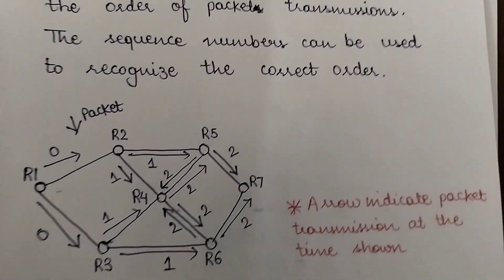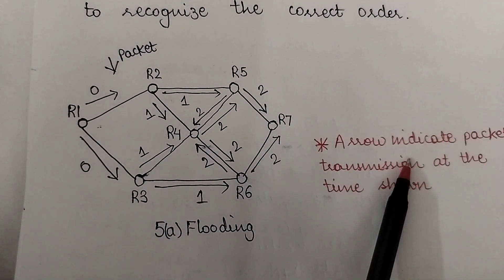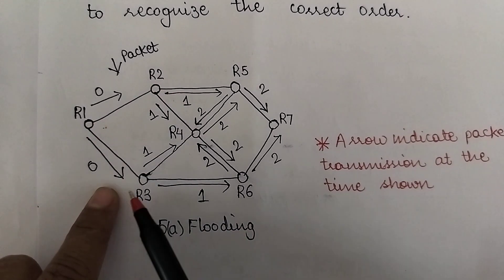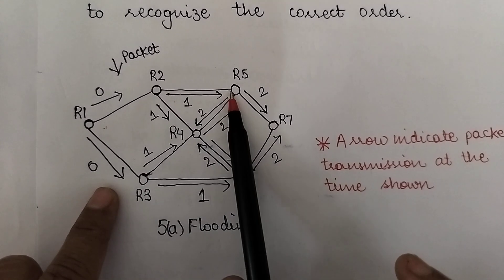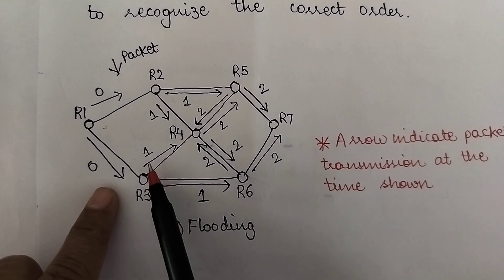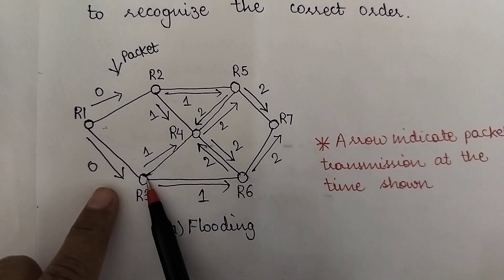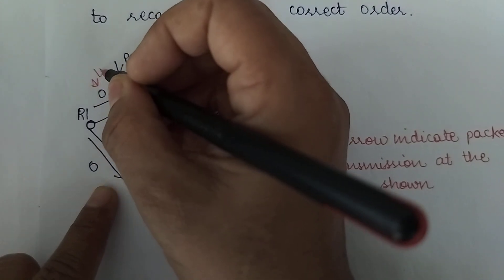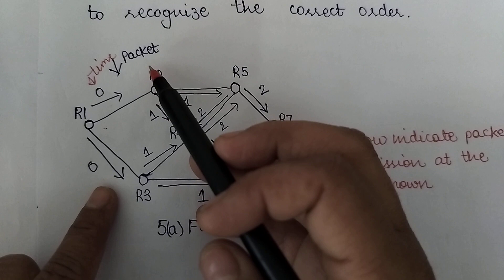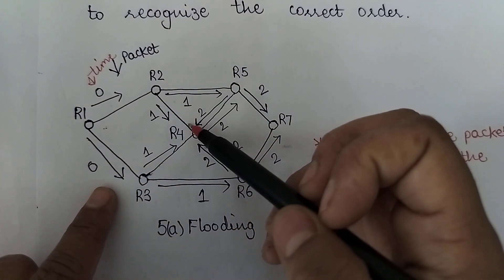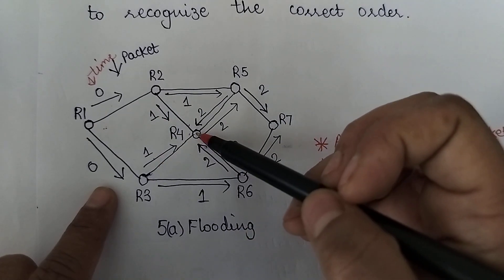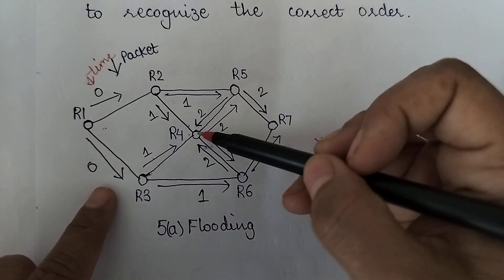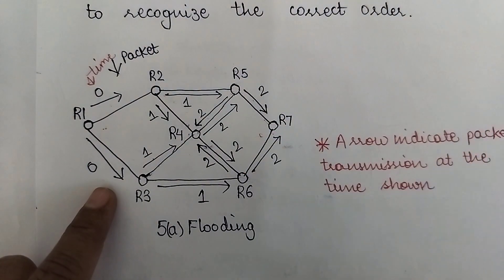The arrows in the diagram represent packet transmission directions. R1 transmitted to r2 and r3 at time unit zero. At time unit one, r2 and r3 transmitted to r4, and r2 also transmitted to r5. At time unit two, r5 transmitted to r4 and r7, and so on — showing which node transmits to which neighbor at each time unit.